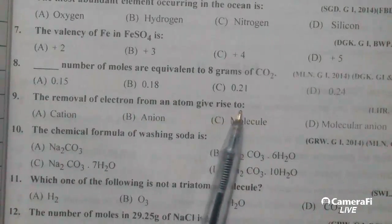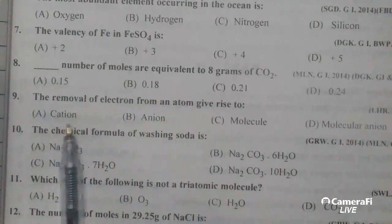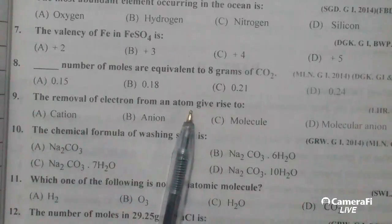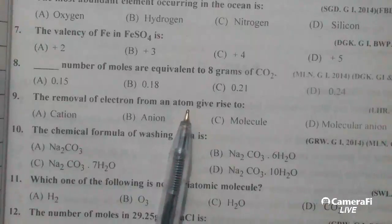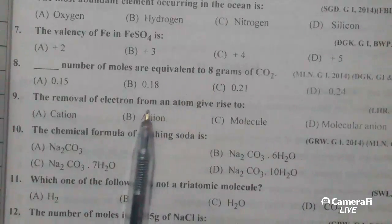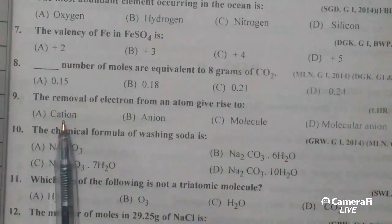If a cation atom electron is released then it will be positive ion. So positive ion, cation.